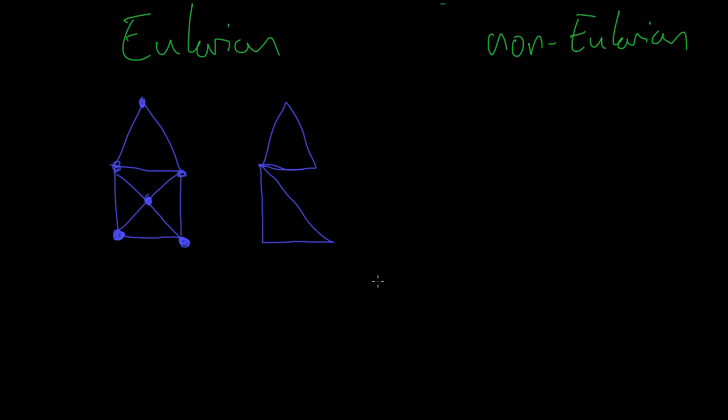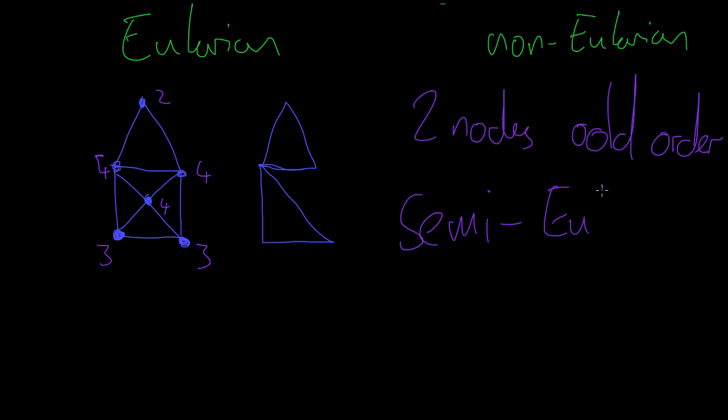So Euler said that you can do this. You can go across every arc, but just finish on different nodes, if your graph has precisely two nodes of odd order. So if we look at this graph, this node has an order of two, this one has an order of four, this one four, this one four. But these two have an order of three. We have precisely two nodes which have an odd order, which means that we can start and finish on these nodes. And he called this type of graph semi-Eulerian.